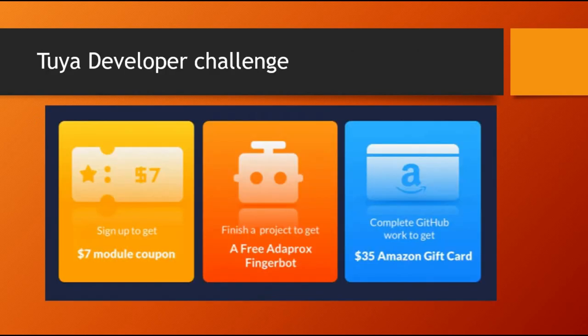Before I get into the actual tutorial, I want to mention the Tuya Developer Challenge, which you can participate in. You can get a seven dollar coupon, and once you complete the project you can get a Finger Bot — a useful robotic component from Tuya that converts non-smart devices like switches into smart devices. You can also get a 35 dollar Amazon coupon. I'll talk about this at the end of the tutorial.